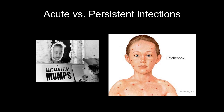Acute infection means you get the infection, your immune system clears it, and you get better — you no longer shed the virus. Persistent means the infection lasts for months or years. Mumps is an acute infection: you get it, it sucks, you get better, and it's gone. Chicken pox seems acute because the rash resolves, but it's actually a persistent latent infection — it hides in your body and can come back later as shingles, which is the same virus reactivating with different symptoms.